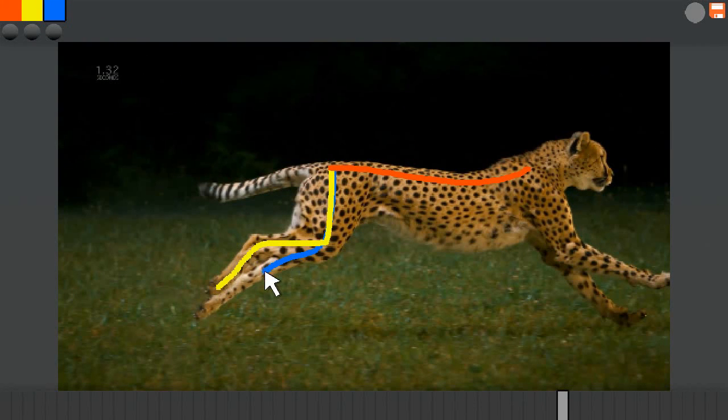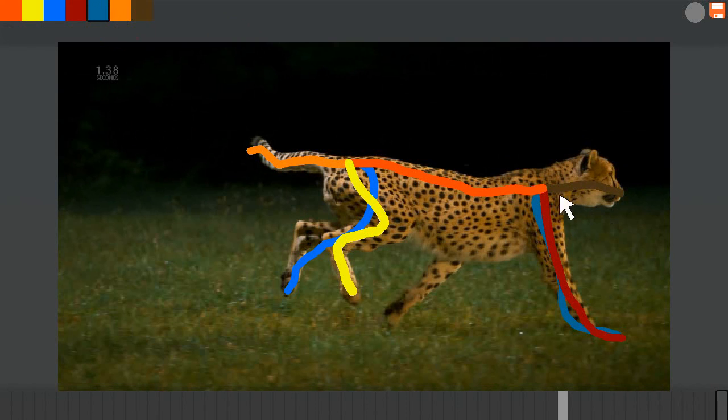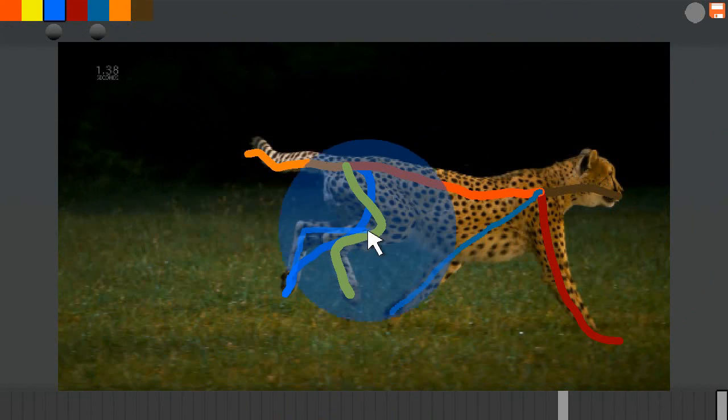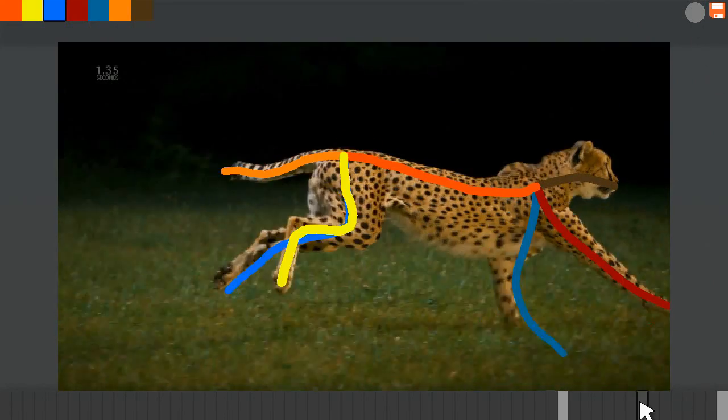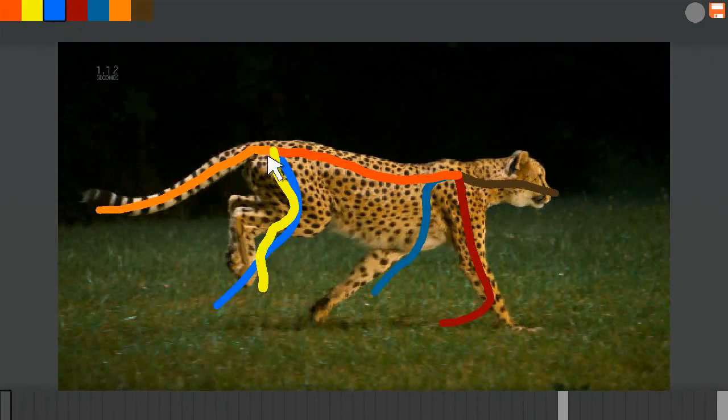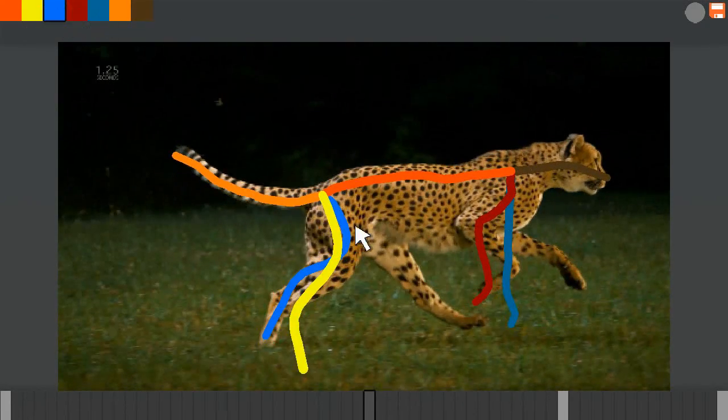A user selects a keyframe and draws a stroke. The strokes are tracked forward and backward in time at interactive rates. If a stroke was not tracked correctly, it can be refined by the user in a new keyframe. A circle shows a suggestion for the remaining length of the bone that facilitates drawing occluded bones. The user continues to draw keyframes until they are happy with the tracked result.